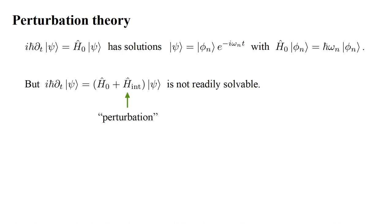If this added term is in some sense small compared to the original H-hat-zero, we can think of it as a small perturbation of the system and try to develop a solution in terms of the solutions of the original unperturbed system. For notational simplicity going forward, we assume units in which h-bar equals one.